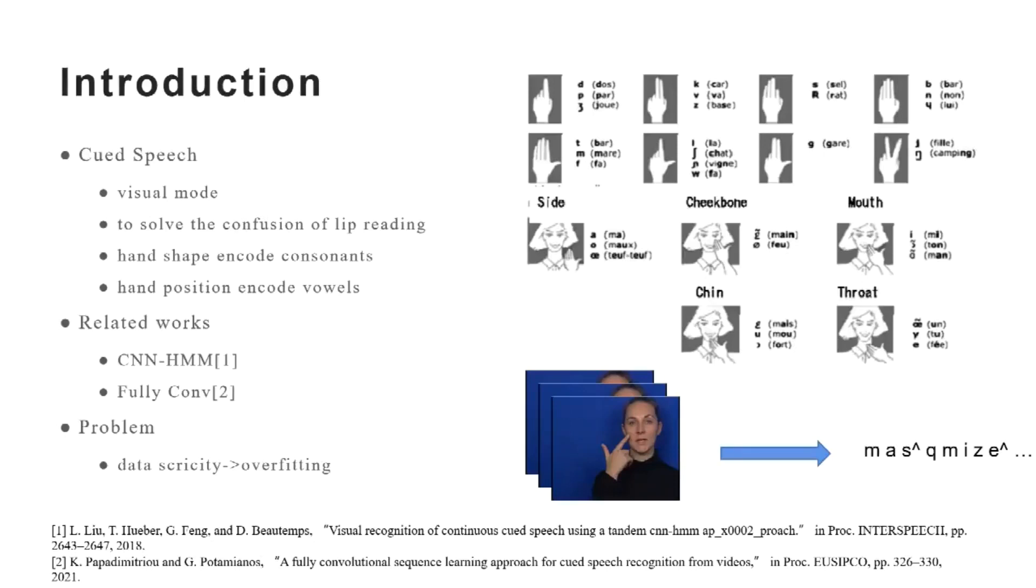Cued speech is a visual communication system for deaf or hearing-impaired people. It combines mouth movements with hand cues to obtain a complete phonetic repertoire. The hand shape is used to encode consonants and the hand position is used to encode vowels.